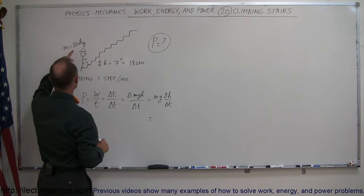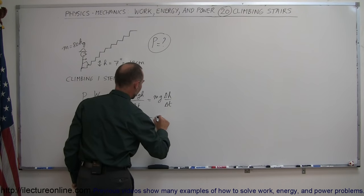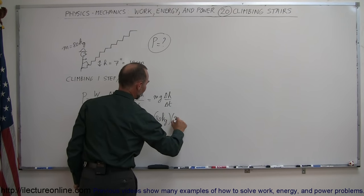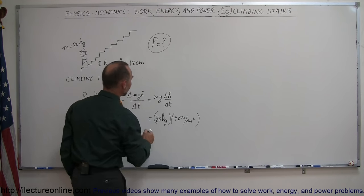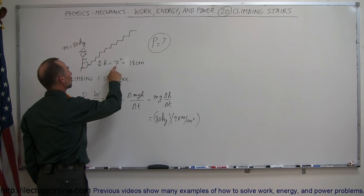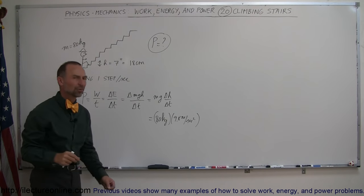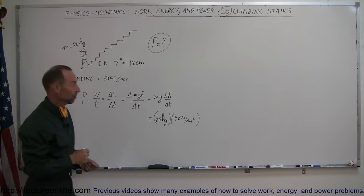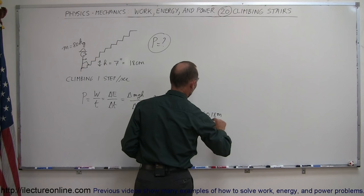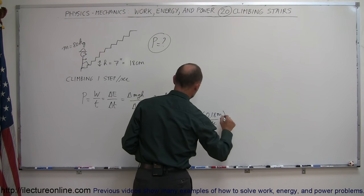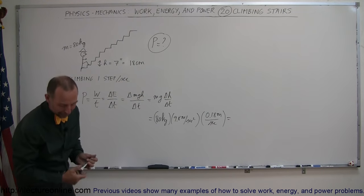So here we're talking about a man with a weight of 80 kilograms. The acceleration due to gravity is 9.8 meters per second squared, and the change in height over time is 7 inches per second or 18 centimeters per second, which we have to convert to meters per second. That's equal to 0.18 meters per second, and that would be the power required to keep climbing those stairs.